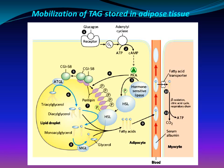Mobilization of triacylglycerols stored in adipose tissue: the hormone binds to its receptor in the adipocyte membrane. Binding of the hormone stimulates adenylyl cyclase via G protein to produce cyclic AMP. Cyclic AMP activates protein kinase A, which phosphorylates hormone-sensitive lipase and perilipin molecules on the surface of the lipid droplet. Phosphorylation of perilipin causes dissociation of the protein CGI-58 from perilipin.